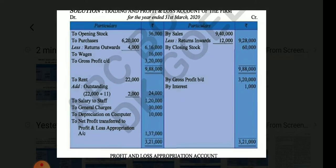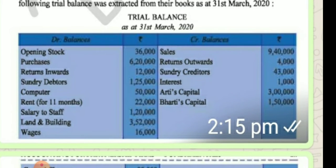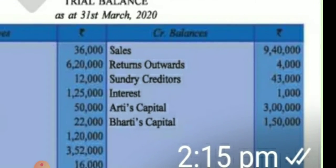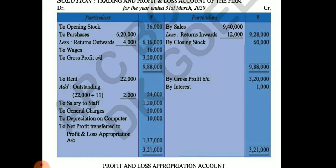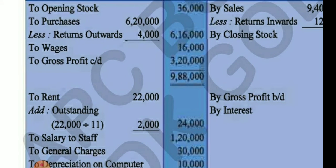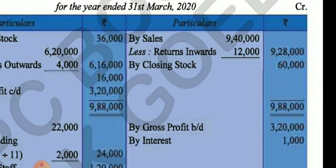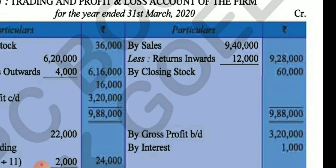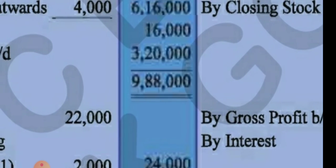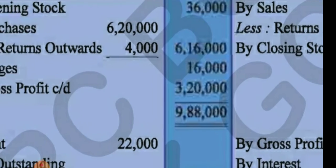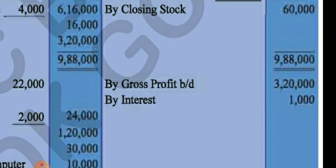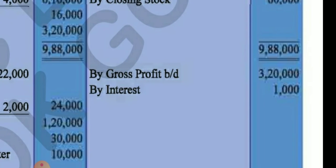Return outward ₹4,000 is deducted from purchases. Then wages — no adjustment — then by sales ₹9,40,000, less return inward ₹12,000, giving net sales ₹9,28,000. Closing stock is ₹60,000. The total of the credit side is ₹9,88,000. The difference is gross profit: ₹3,32,000, transferred as gross profit brought down ₹3,32,000.